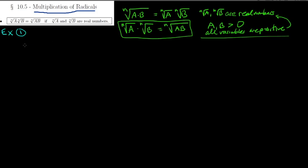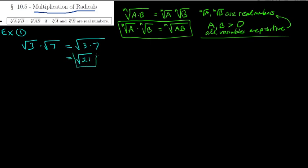Example 1: suppose we have the square root of 3 times the square root of 7. You do exactly as you think you should — multiply 3 times 7 and then take the square root. 3 times 7 is 21, so we end up with the square root of 21. There's no way to simplify this because it's the product of just two prime numbers, 3 and 7. So that's all there is to do.